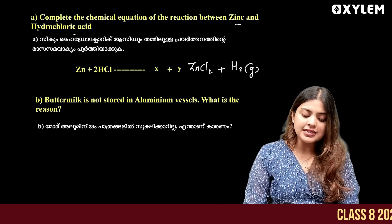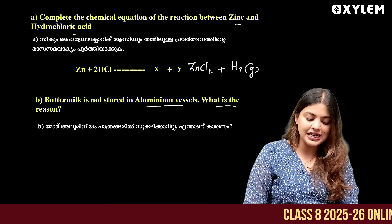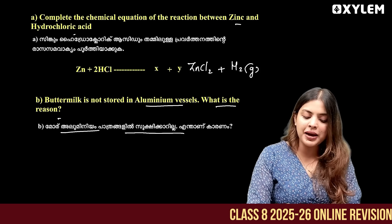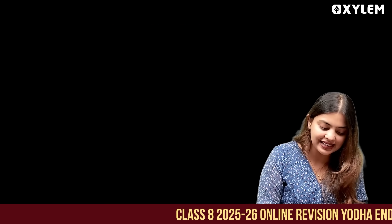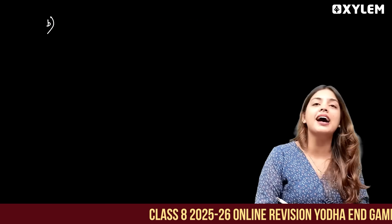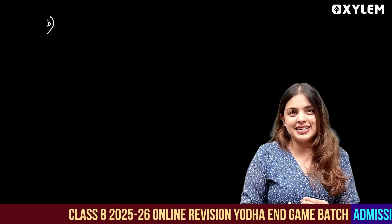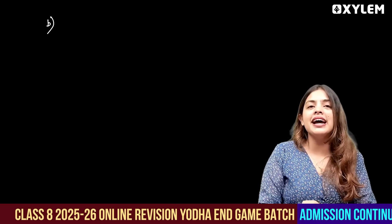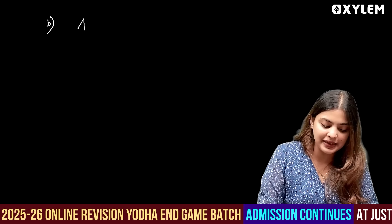Buttermilk is not stored in aluminium vessels. What is the reason? Aluminium will react with the acid present in buttermilk.